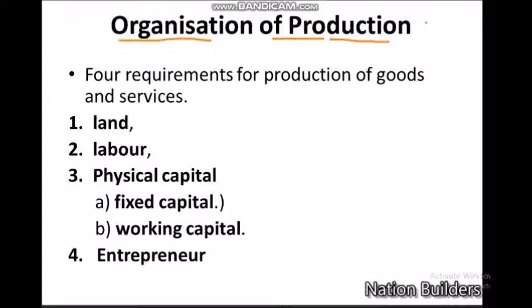The aim of production is to produce the goods and services that we want. Every production aims to produce the goods and services which are needed by the people. There are four requirements for production of goods and services. Whenever you are making any goods or service, these are the four factors which are needed: Land,